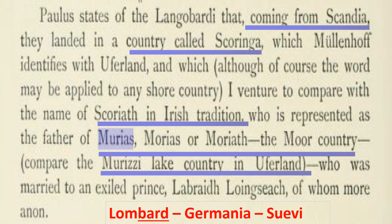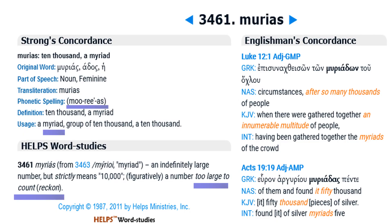Regardless of how you look at these narratives, you come right back to Europe in terms of the origin of this particular family group. This doesn't mean that Japheth started in this area — this is simply where this particular descendant group originated, just as your ancestors may have been born in one place and you're born in another. There is also a very on-point reference in Strong's Concordance related to Murias: it means 10,000, but also means myriad — something countless or too large to reckon. When you think about the dispersion of the Moor Clan around the world, the idea of myriad makes perfect sense.